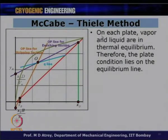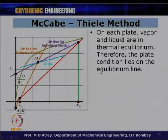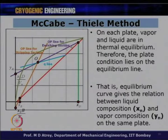This equilibrium condition exists on each plate. On every plate, vapor and liquid are in thermal equilibrium because of heat transfer between them. The plate condition therefore lies on the equilibrium curve. The equilibrium curve gives the relationship between the liquid composition xn and vapor composition yn on the same plate — it relates yn and xn for every plate.